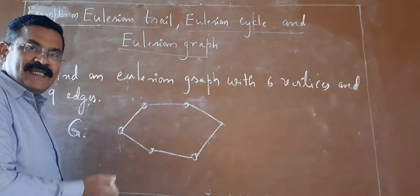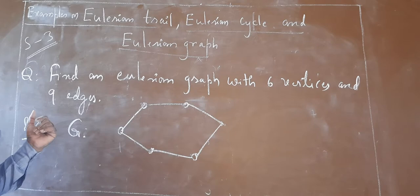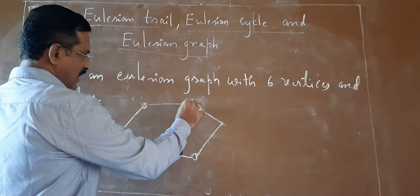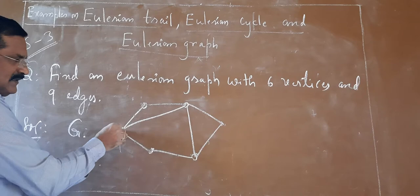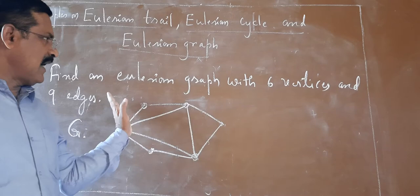We need an Eulerian graph with six vertices and nine edges. The simple cycle gives only six edges, so you need to add three more edges. I may add one more edge here, one more edge here, and one more edge here. According to me, it is now an Eulerian graph with six vertices and nine edges.